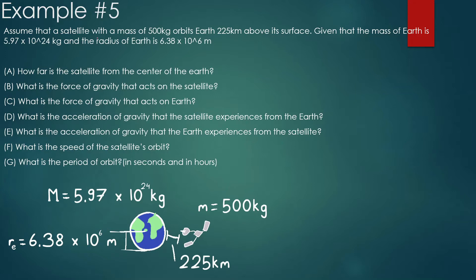Assume that a satellite with a mass of 500 kilograms orbits Earth 225,000 meters above its surface. Given that the mass of the Earth is 5.97 times 10 to the 24 kilograms and the radius of the Earth is 6.38 times 10 to the 6 meters, how far is the satellite from the center of the Earth?